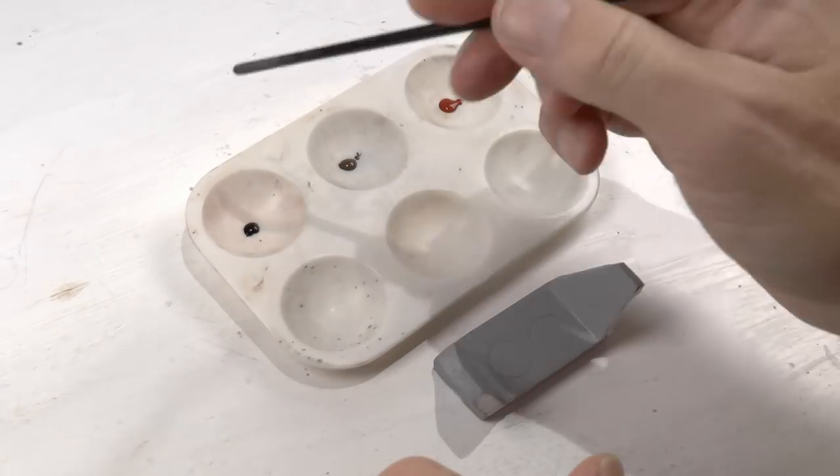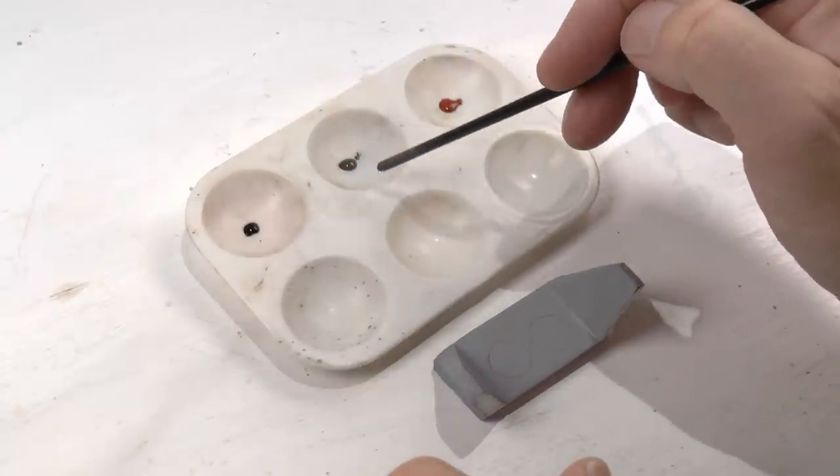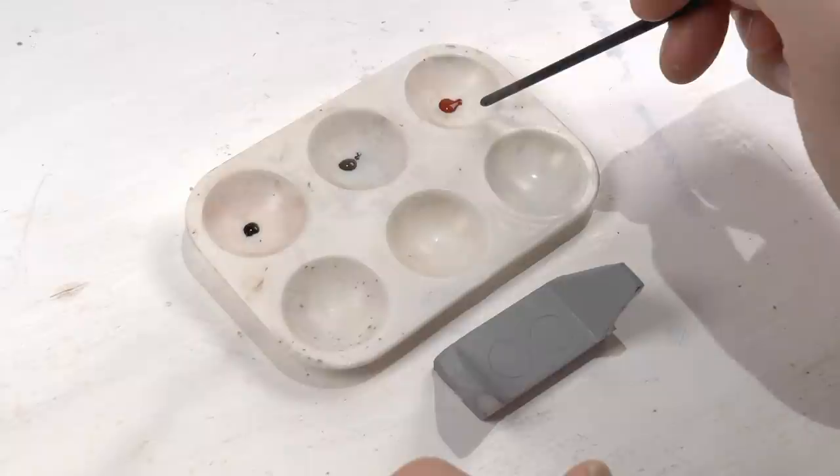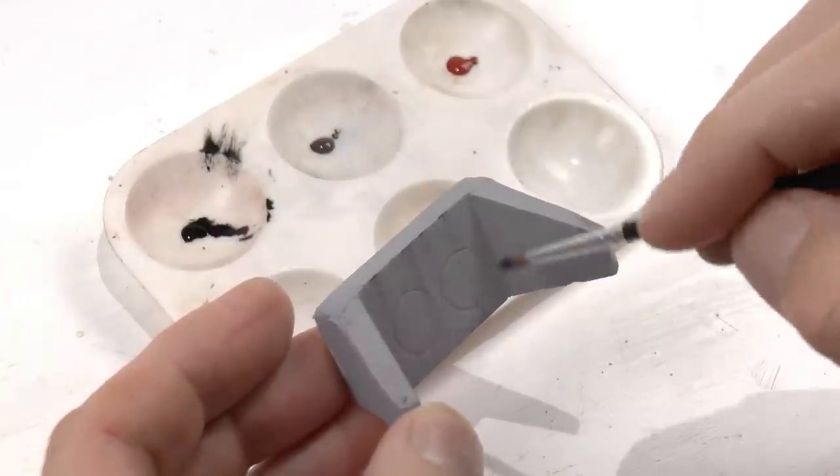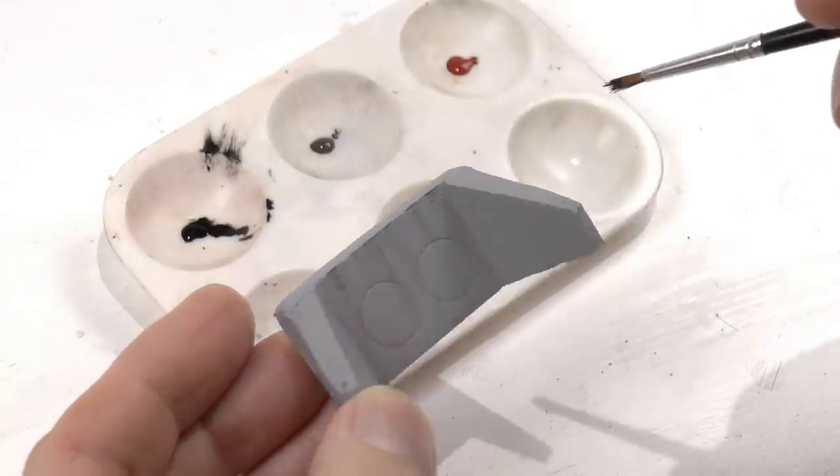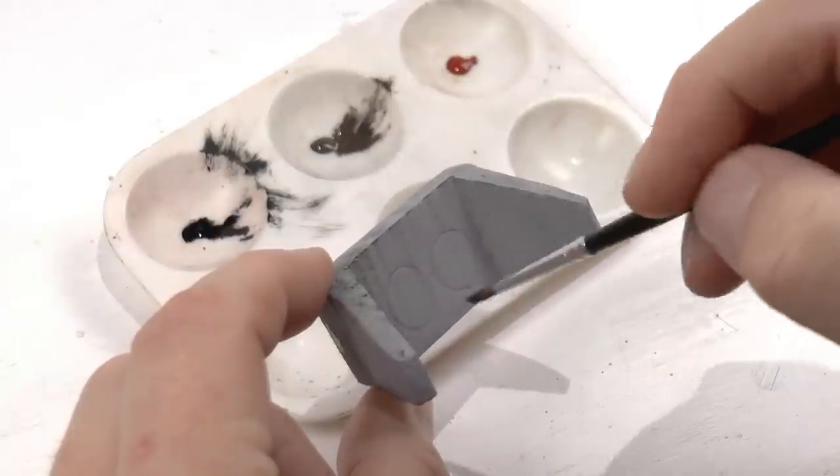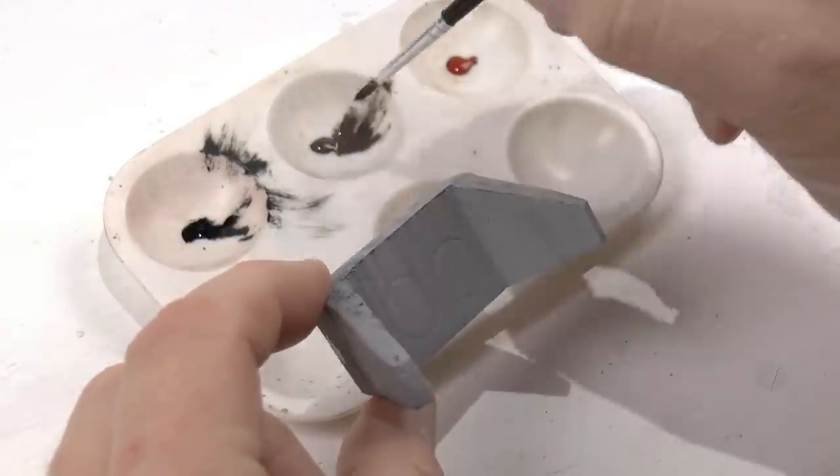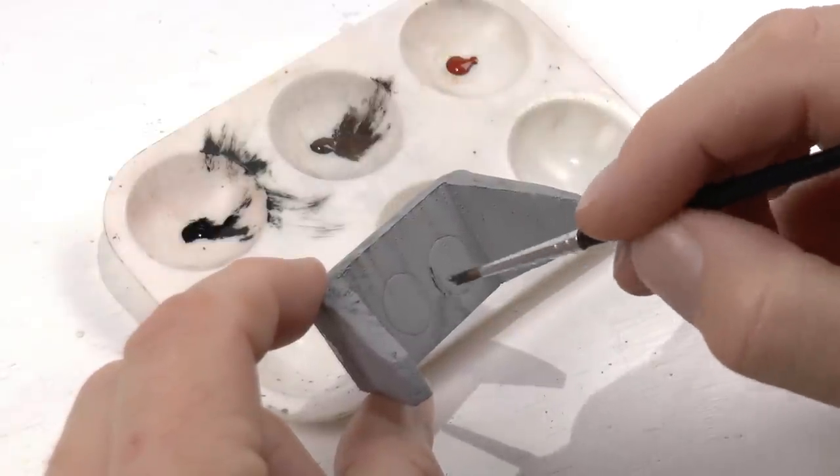For this I'm using three colors. This is black, burnt umber brown, and cavalry brown which is kind of reddish brown. First I'm starting by adding streaks of black. Make sure to wipe off most paint from your paintbrush to get these thin low density streaks.